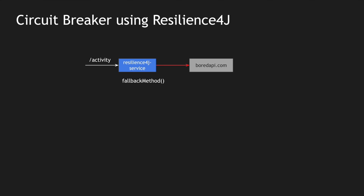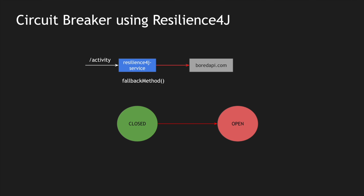In a circuit breaker, by default when things are successful, when the Resilience4j service connects to the Bored API, the circuit is closed — that's the happy path. Whenever there is a failure, the circuit goes into an open state after a particular number of failures. Once the circuit is open, every new request gets rejected by default — we fail fast instead of calling the Bored API, which could be in the process of coming back up.